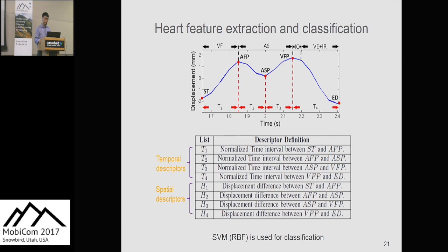For feature extraction, we use the displacement signal and its fiducial points to extract temporal descriptors and spatial descriptors — specifically, normalized time intervals and displacements among the fiducial points. These features are then fed into an SVM with an RBF kernel as the classification method for authentication.